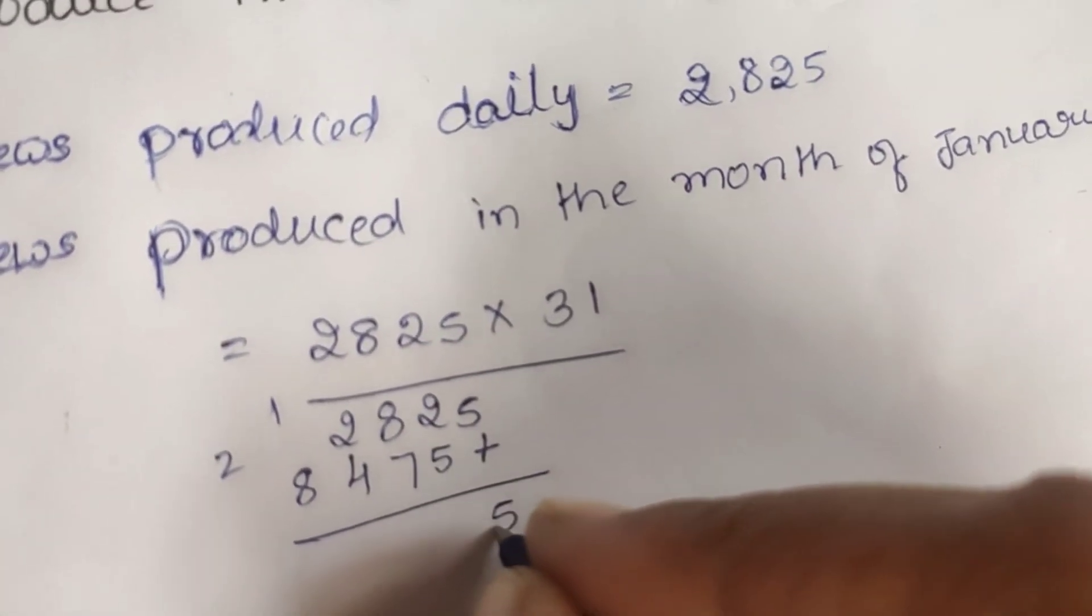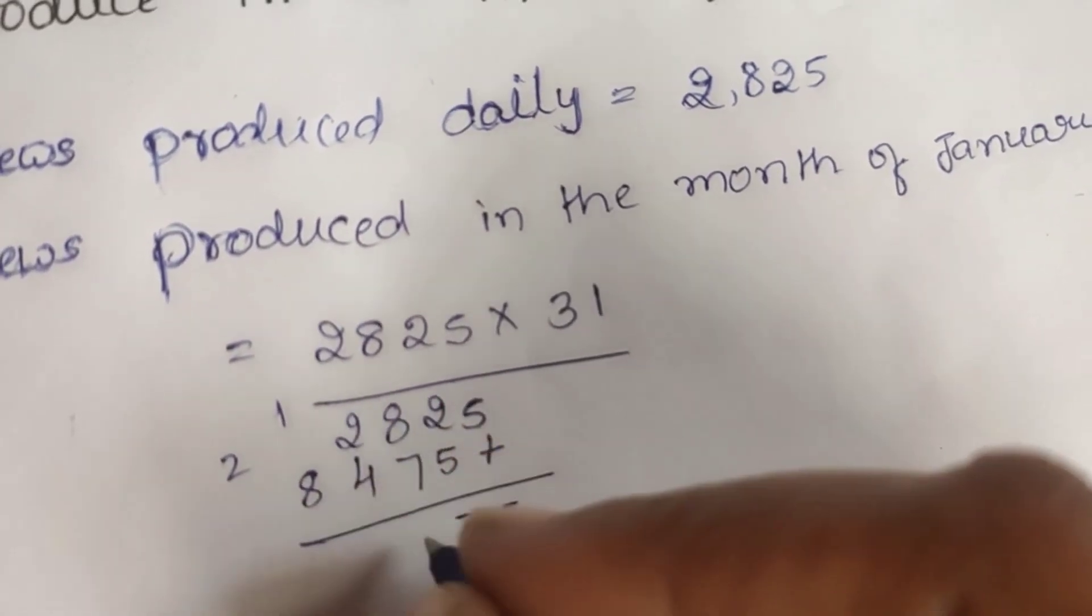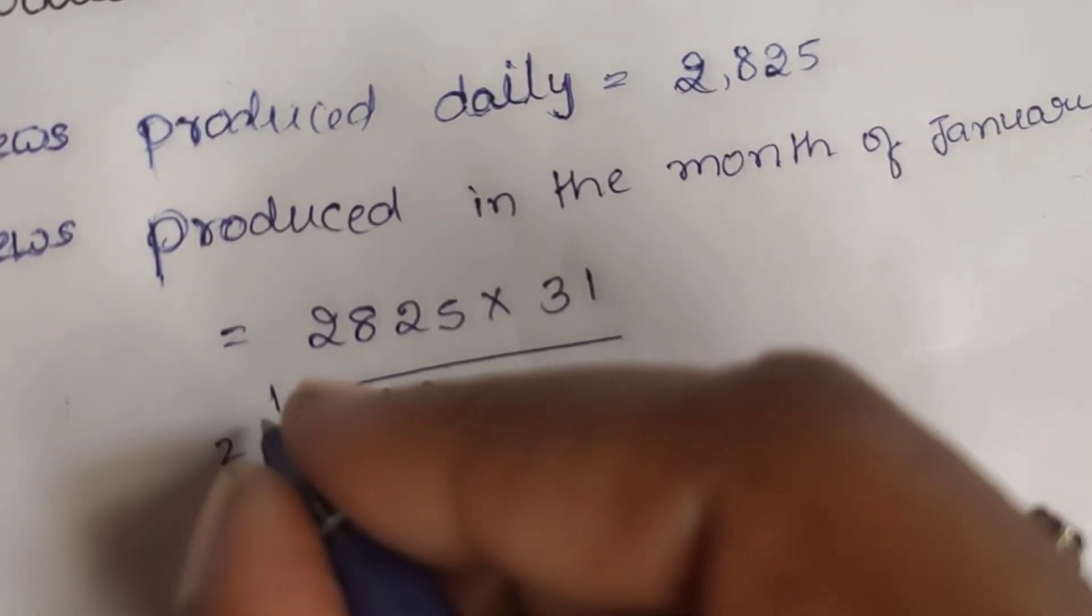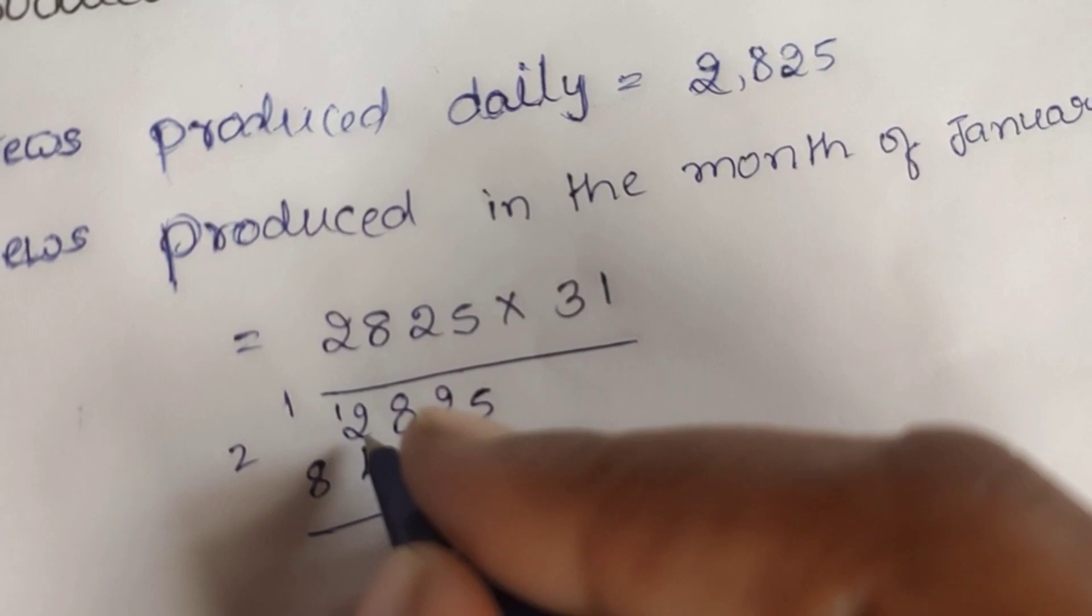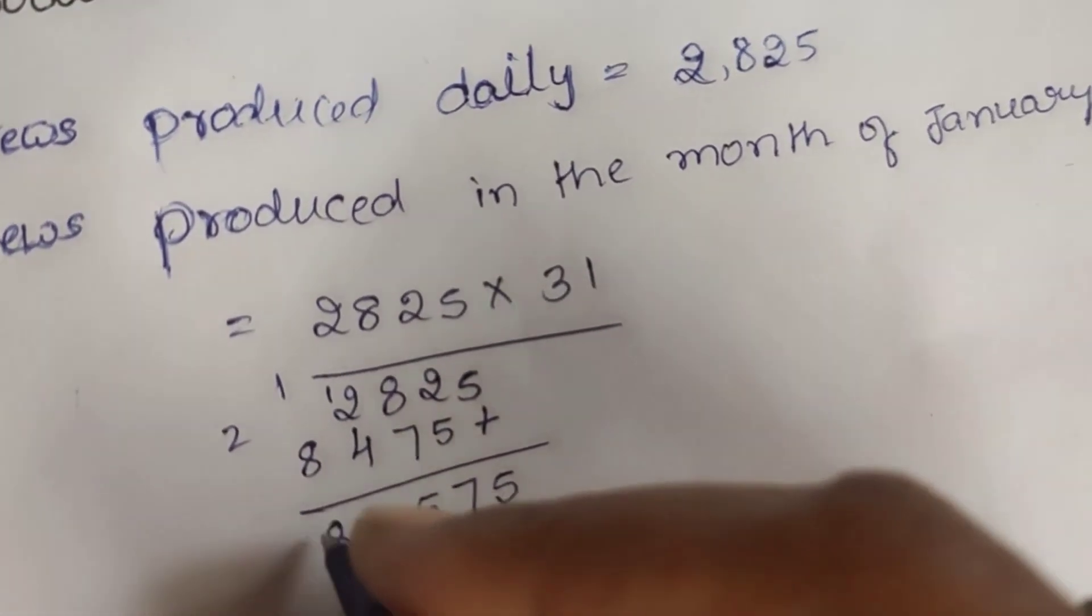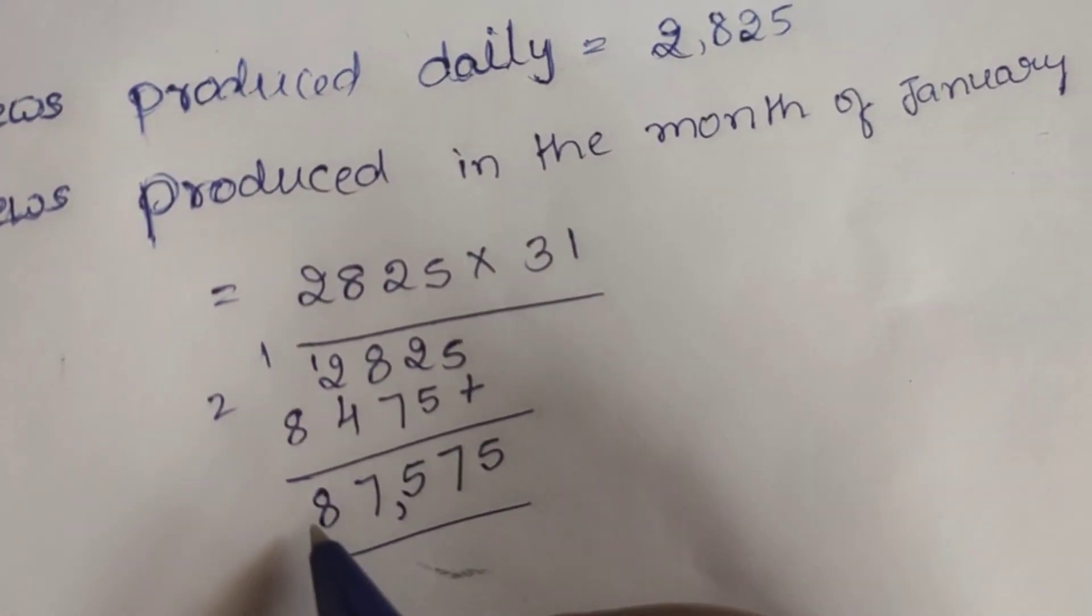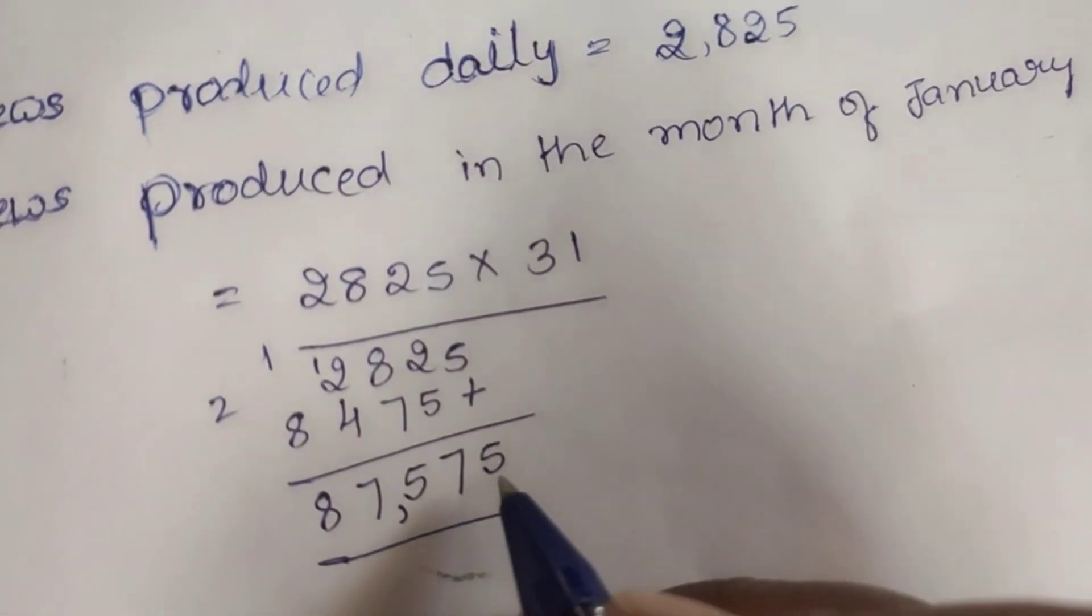So, add. 5, 2 plus 5 is 7, 8 plus 7 is 15, so 1 carry, 1 plus 2 is 3, 3 plus 4 is 7, and 8. In the month of January, it produces 87,575 screws.